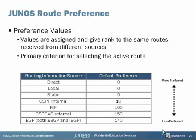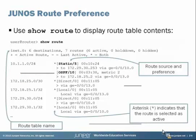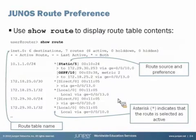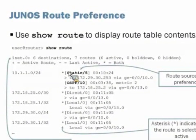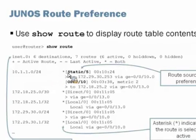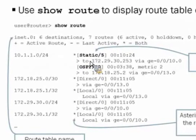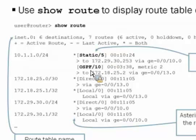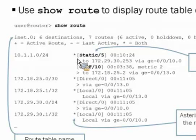The lower the preference value, the higher the preference for the route. You can observe the preference value via the show route command. In this case we're learning 10.1.1.0/24 via two different routing protocols — static as well as OSPF. Notice that static has a default preference value of 5 while OSPF has a preference value of 10. Static, with the preference value of 5 being preferred, will be installed as the active route as noted by the asterisk.